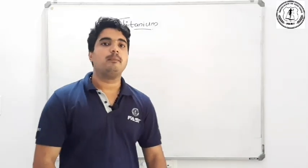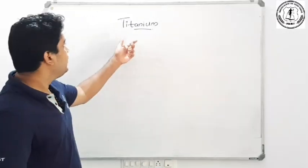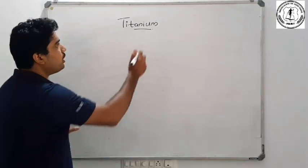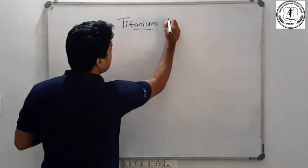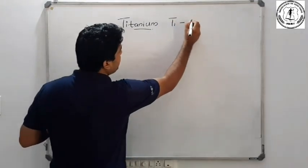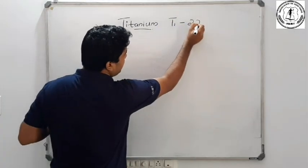The next metal is Titanium. Its symbol is Ti and its atomic number is 22.